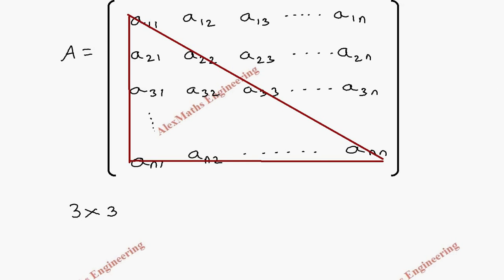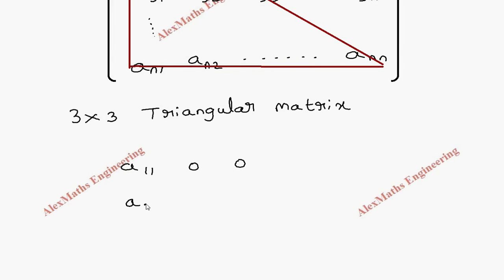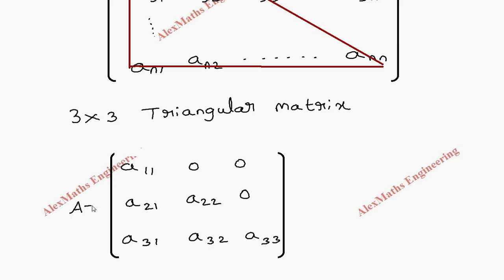The lower triangular matrix will be: a11, then the remaining two elements in the first row are 0; second row is a21, a22, and 0; third row is a31, a32, and a33. So we have taken a 3×3 triangular matrix where the elements are present in the triangular form and the other elements are 0.